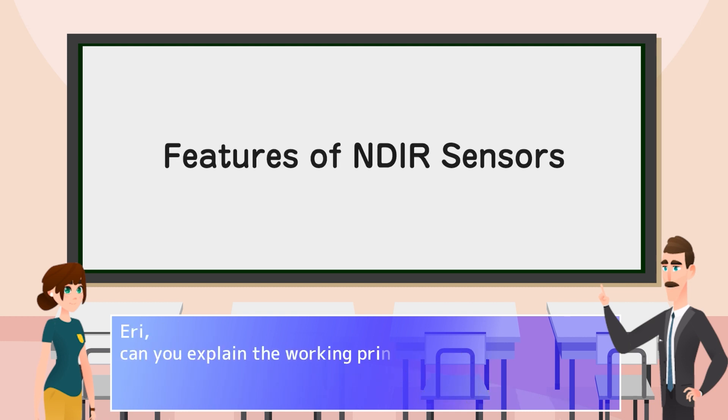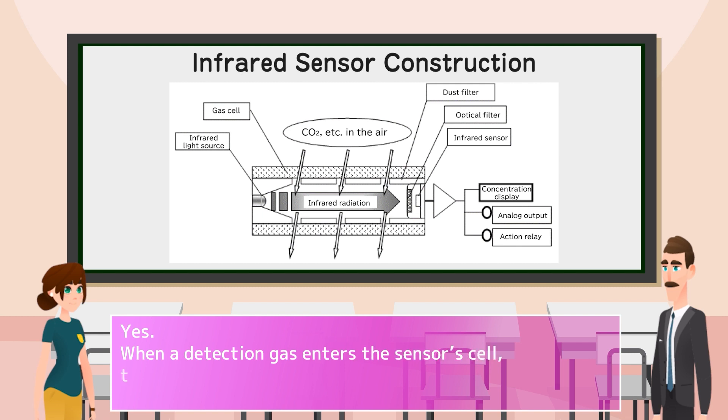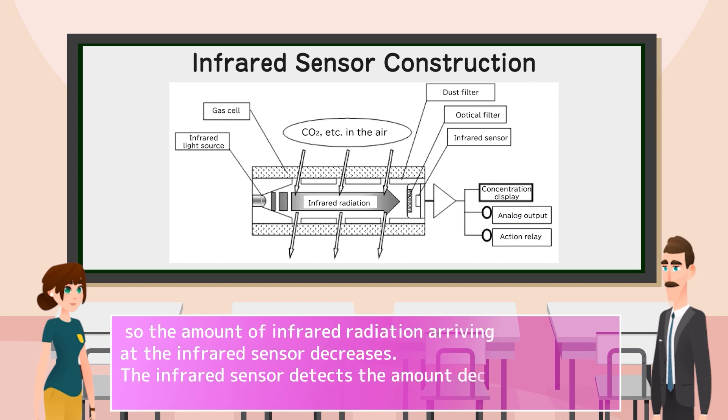Ari, can you explain the working principle of infrared sensors? Yes. When a detection gas enters the sensor's cell, the infrared radiation emitted by the light source is absorbed by the detection gas. So the amount of infrared radiation arriving at the infrared sensor decreases.